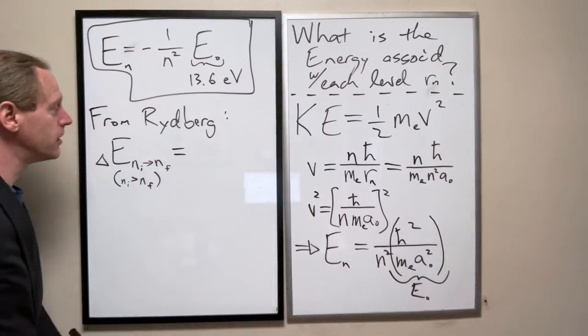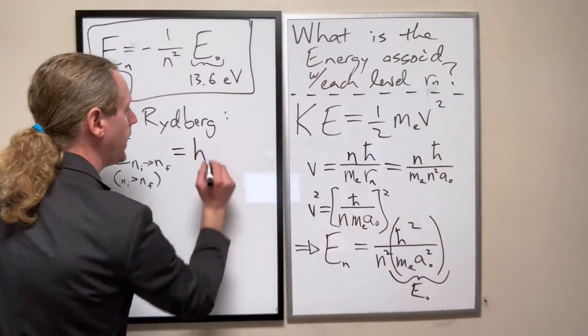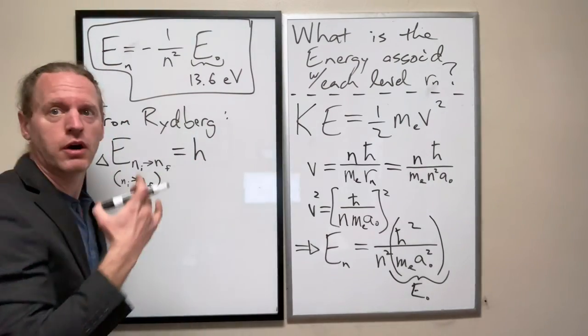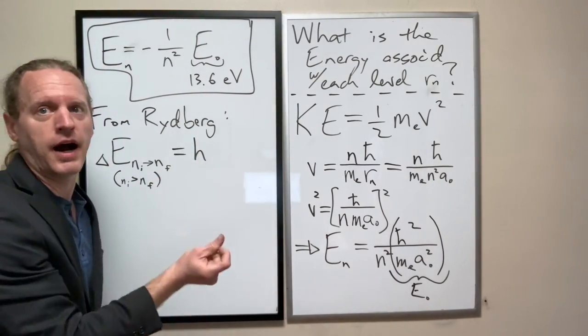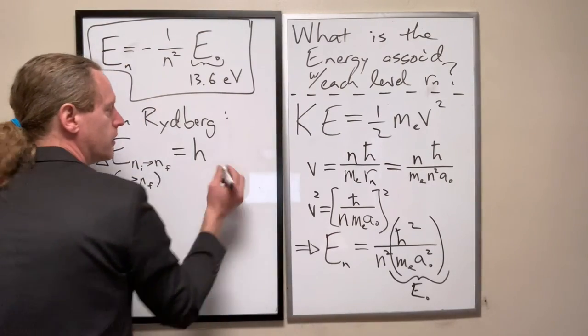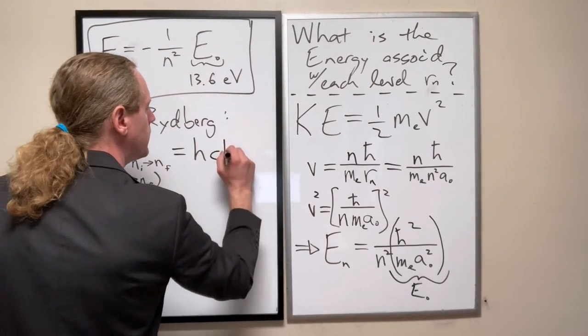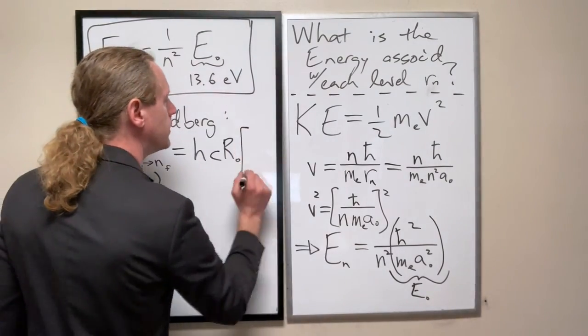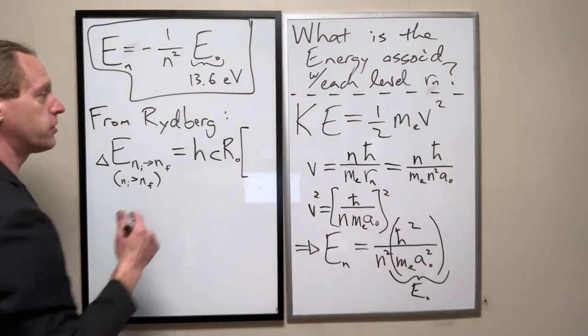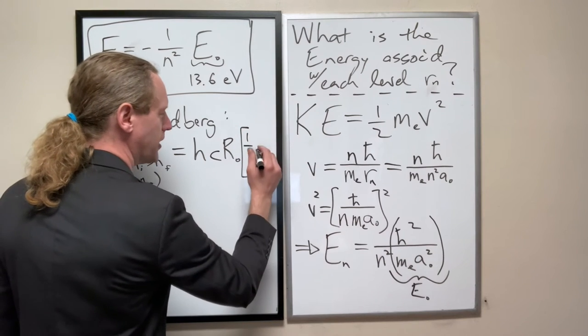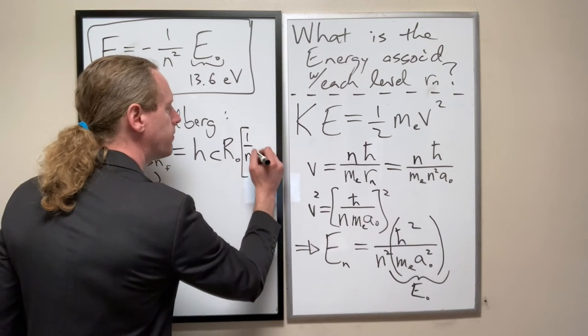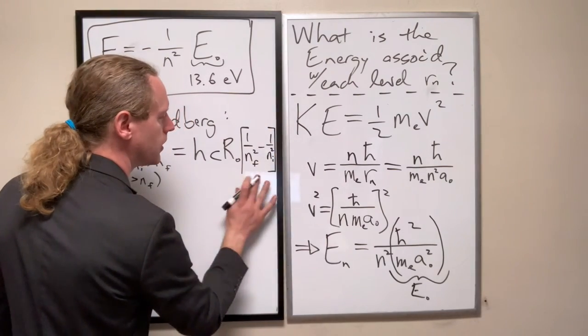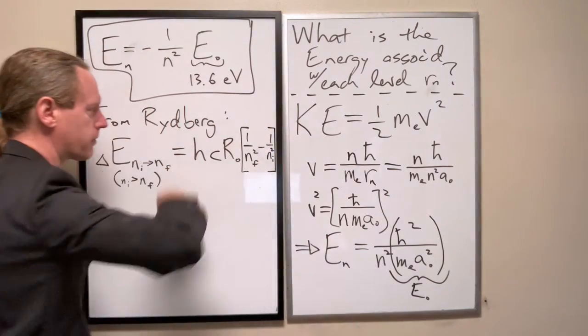And the exact formula was given by H, so not H-bar here, but H, and just as you recall, when you take H and divide it by 2 pi, that's when you get H-bar. So H, C, R nought, and then that energy difference was, I've run out of room, 1 over N_F squared minus 1 over N_I squared. The joys of using a home blackboard here.